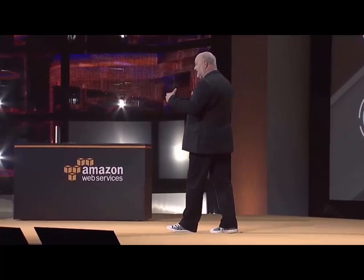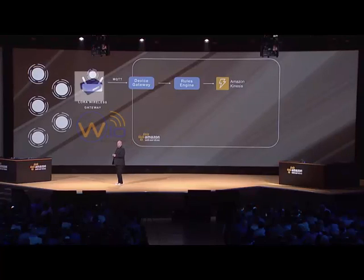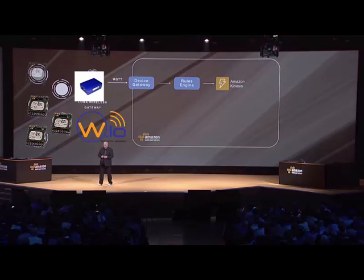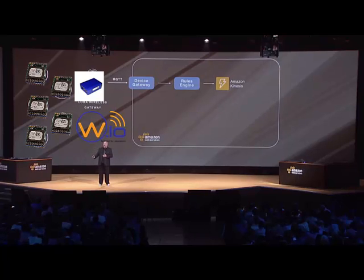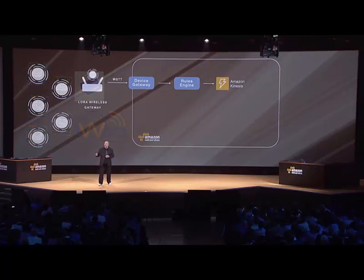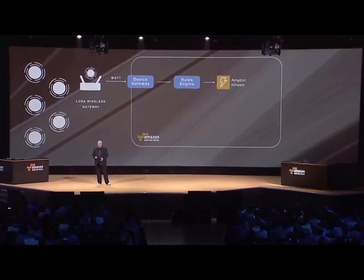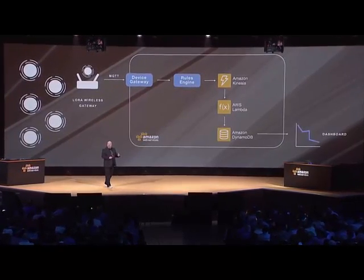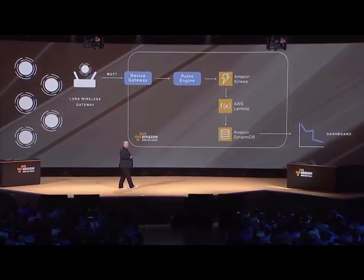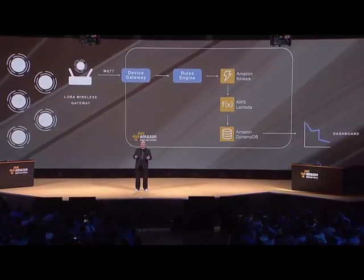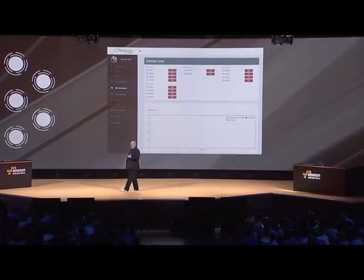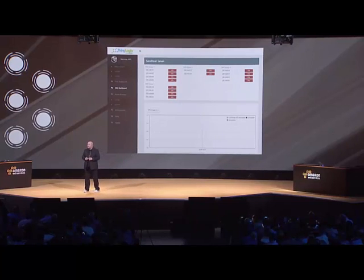This is making use of the AWS IoT service to build this whole application. When they communicate through the device gateway, a set of rules automatically pushes that data into Kinesis for analytics, as well as storage in DynamoDB, where you can then get dashboard information about the state of the different devices.